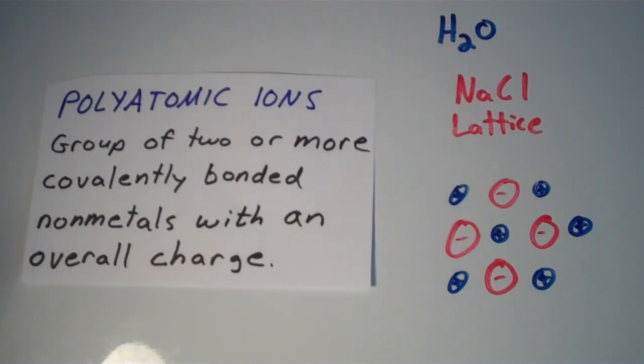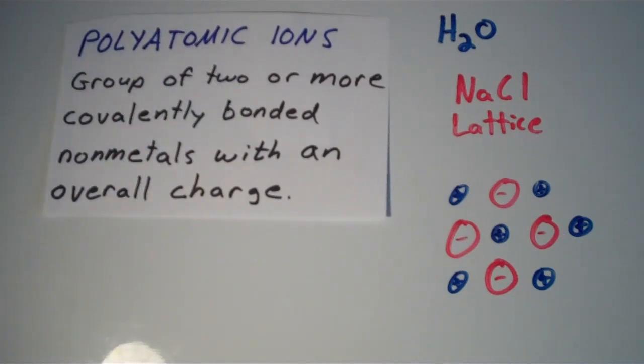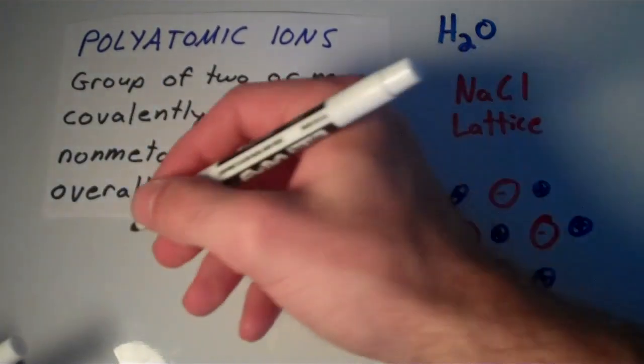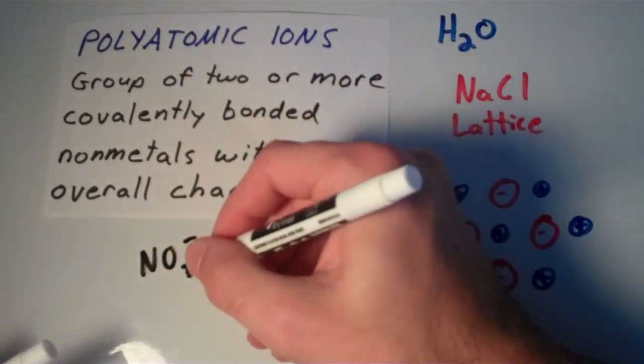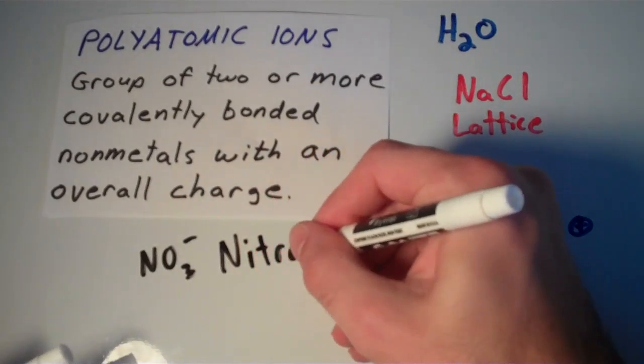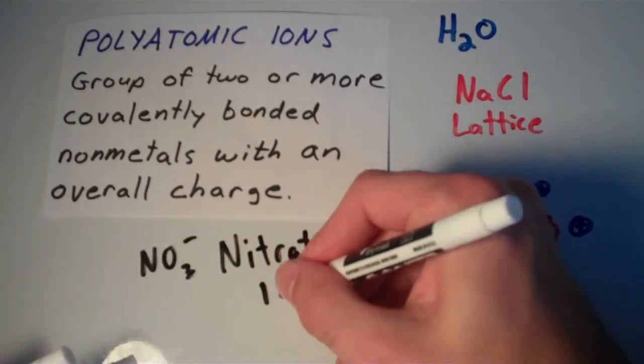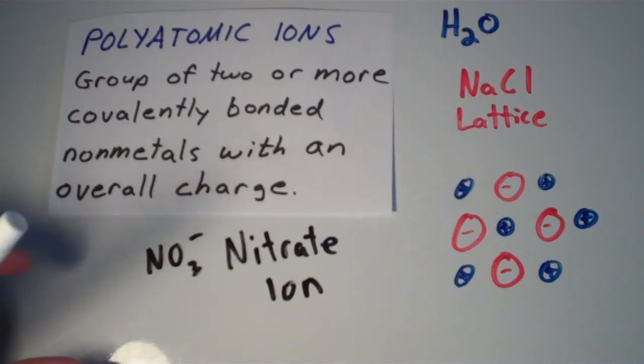So a polyatomic ion, to put it simply, is just a molecule with a charge. So there's a couple of common polyatomic ions that you should probably memorize. Polyatomic ions such as NO3-, this is called the nitrate ion. And in the nitrate ion, we have a nitrogen that has three oxygens covalently bonded to it.